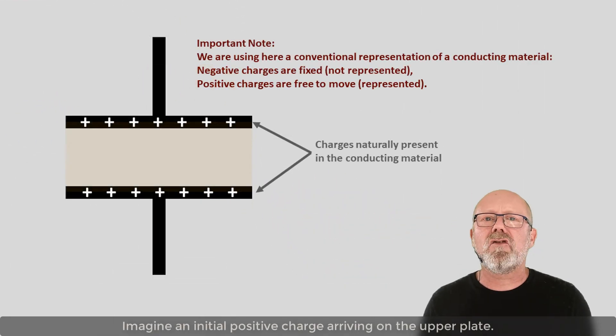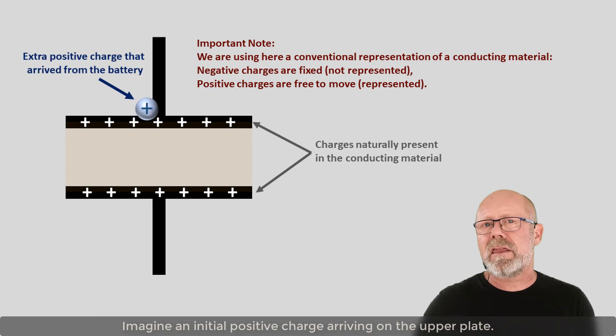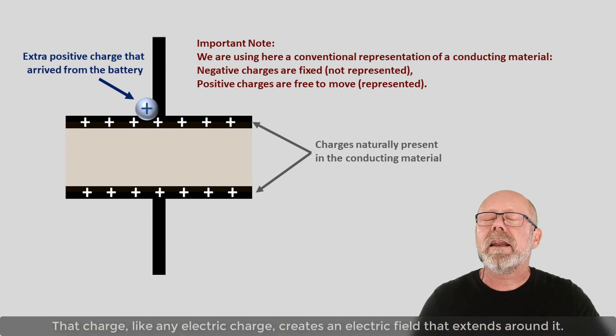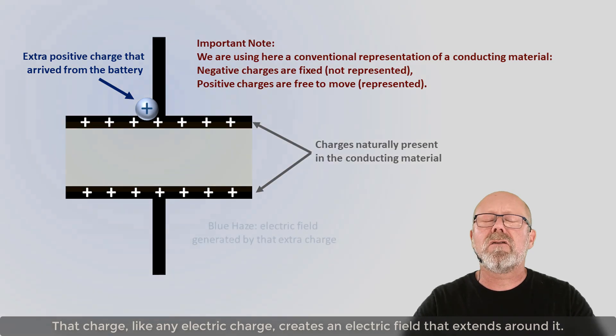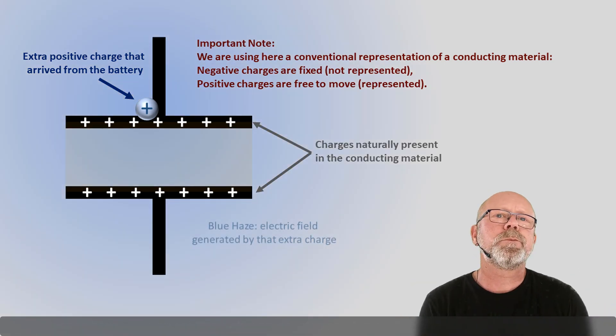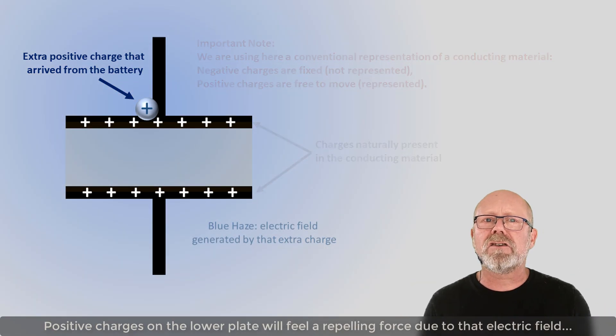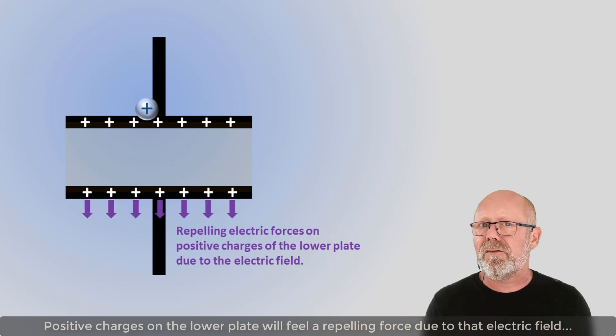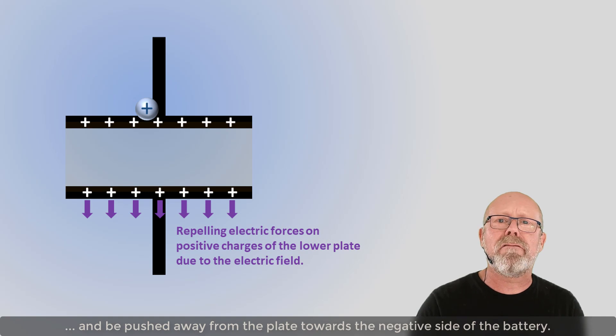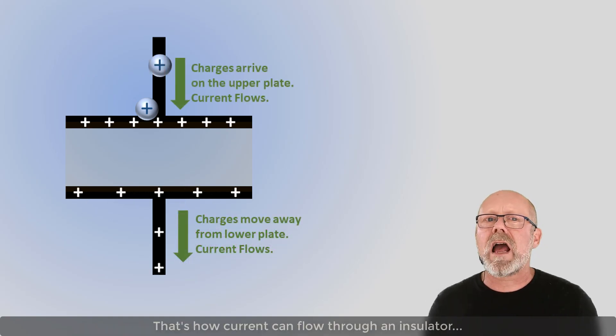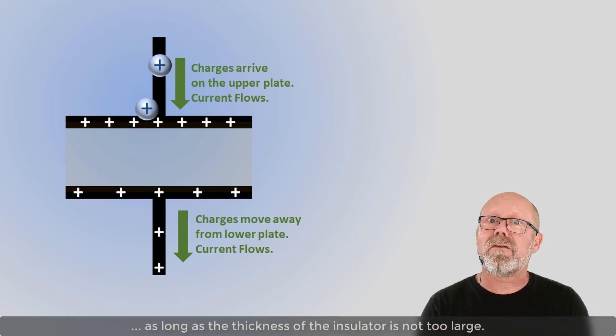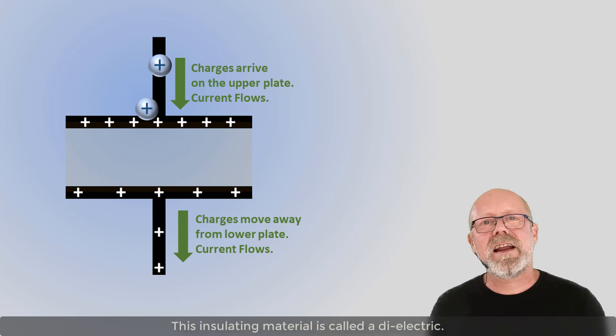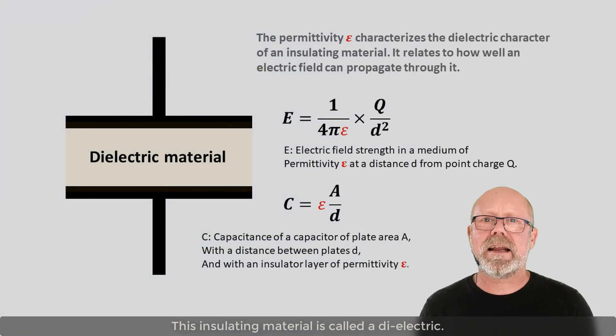Imagine an initial positive charge arriving on the upper plate. That charge, like any electric charge, creates an electric field that extends around it. The positive charges on the lower plate will feel a repelling force due to that electric field, and be pushed away from the plate towards the negative side of the battery. That's how current can flow through an insulator, as long as the thickness of the insulator is not too large.